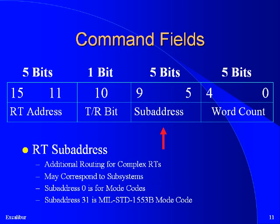The following field within the command word is the sub-address field. Some RTs are comprised of multiple subsystems, and this field can be used within the RT to route the message to the appropriate place. A 0 or 31 in this field indicates that the message is a mode code.